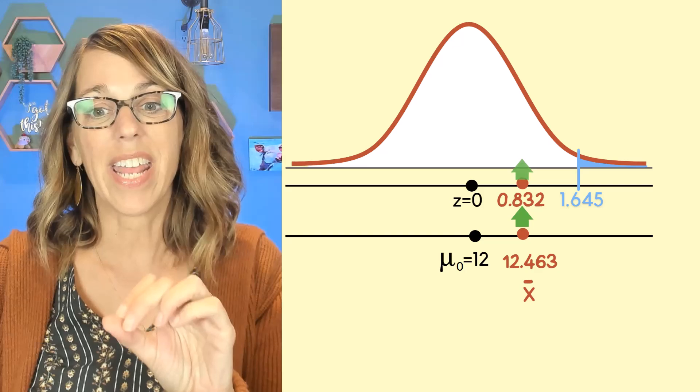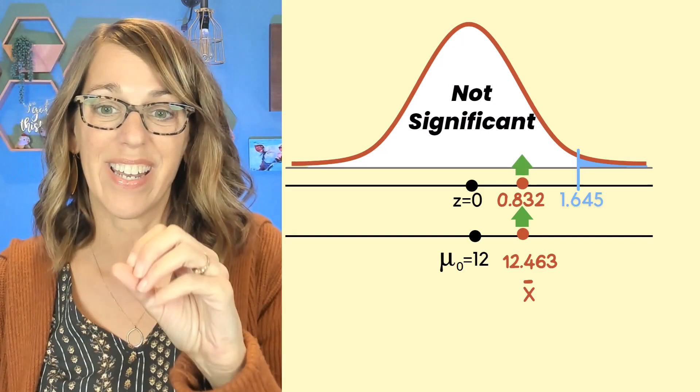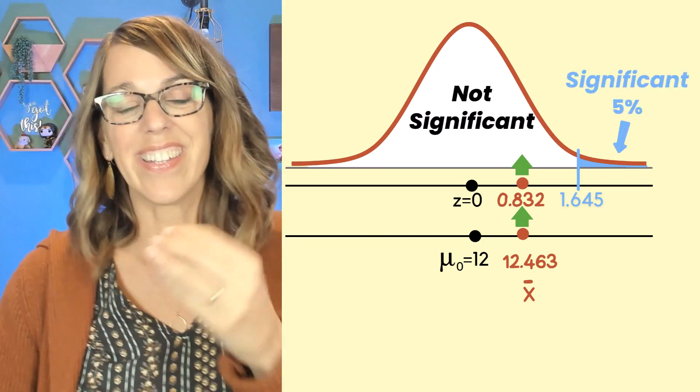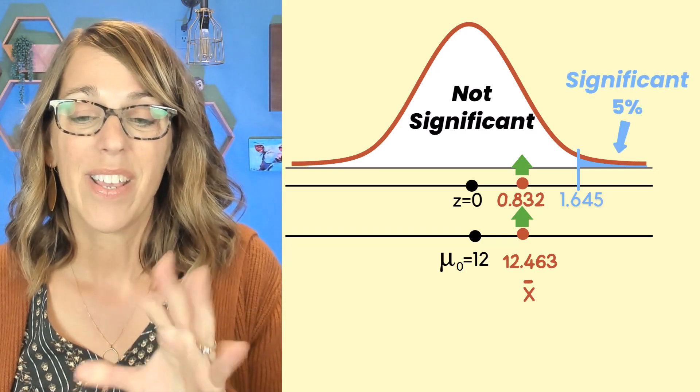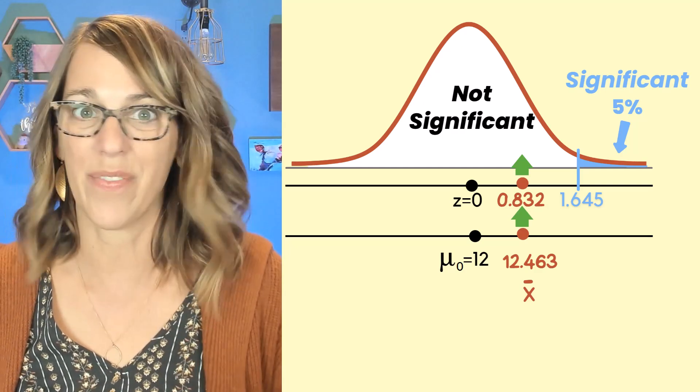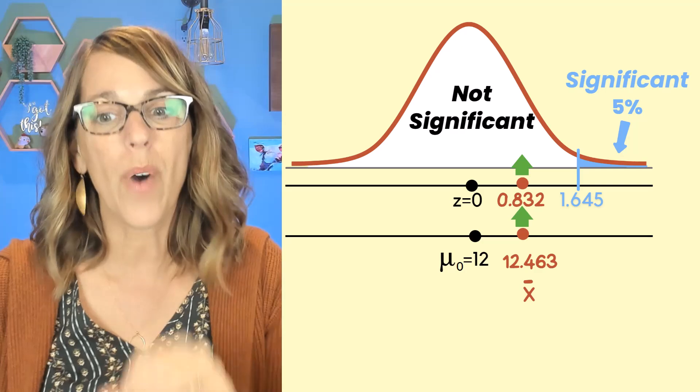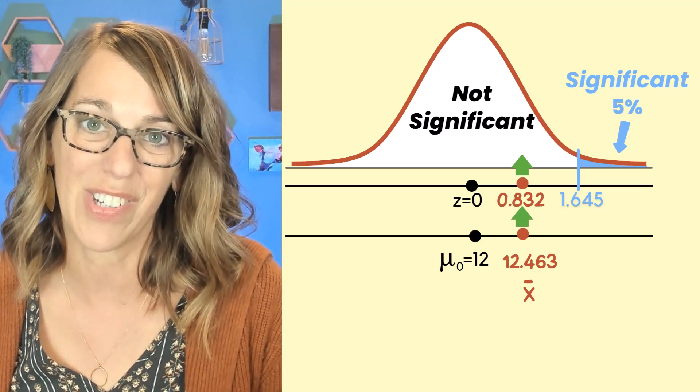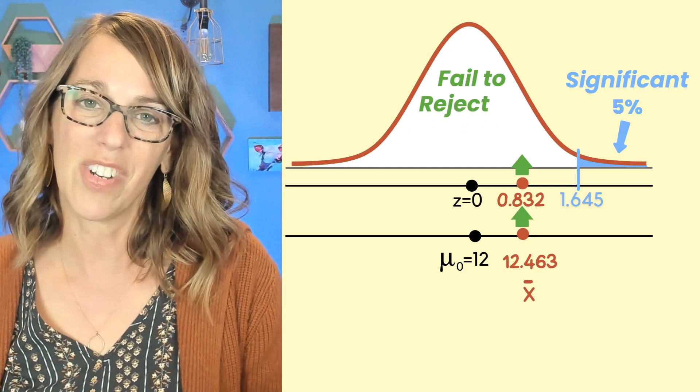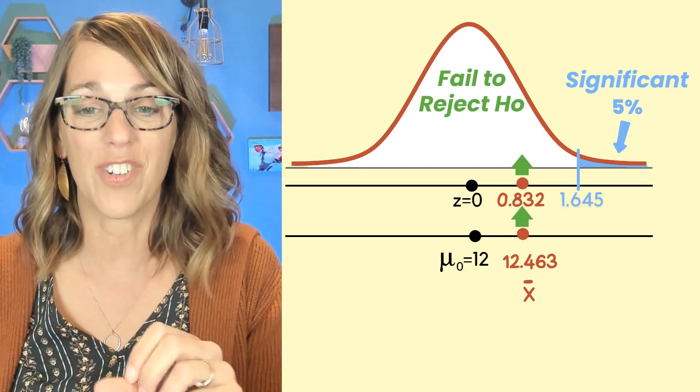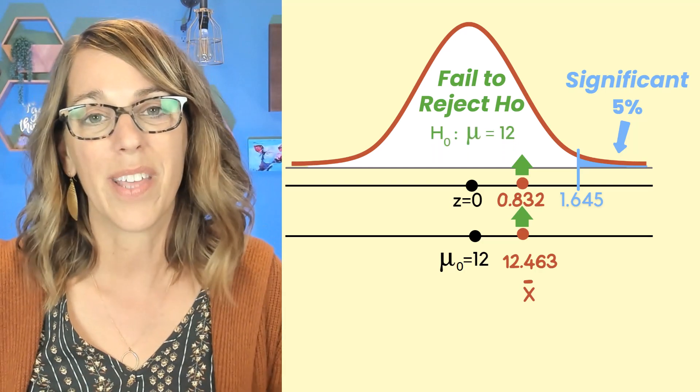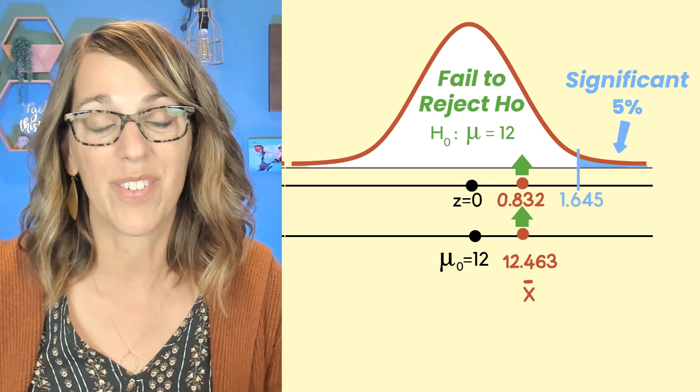That Z score of 0.832 lands us in our not significant region. In order to land in the significant upper 5%, being 0.832 standard deviations away is not far enough. We would need to be that 1.645 standard deviations away. So what does this mean? In terms of our decision, it means that we fail to reject that null hypothesis. We are actually close enough to that population mean being 12.